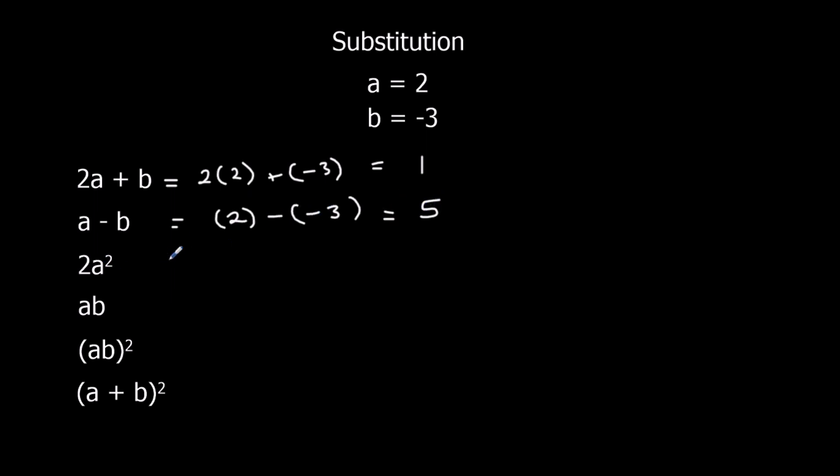2A squared, so it's 2 times 2 squared. 2 squared is 4 times 2 is 8. AB, A times B, 2 times minus 3. Positive times a negative is negative, 2 times 3 is 6, so minus 6.